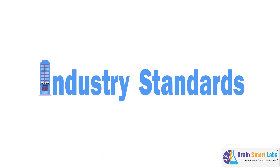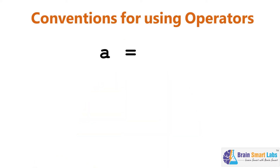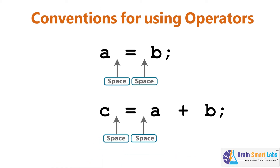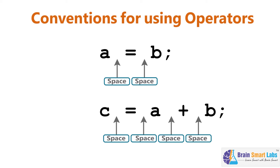We also missed a very important industry standard regarding operators. The standard to keep in mind while using operators is to make code look neat and clean by using proper spacing. A statement like a = b must have a space both on the left and to the right of the assignment operator. Likewise, in any addition or arithmetic operation, you must have a space on both sides of the operator symbol. This convention applies for any operation you perform in Java.